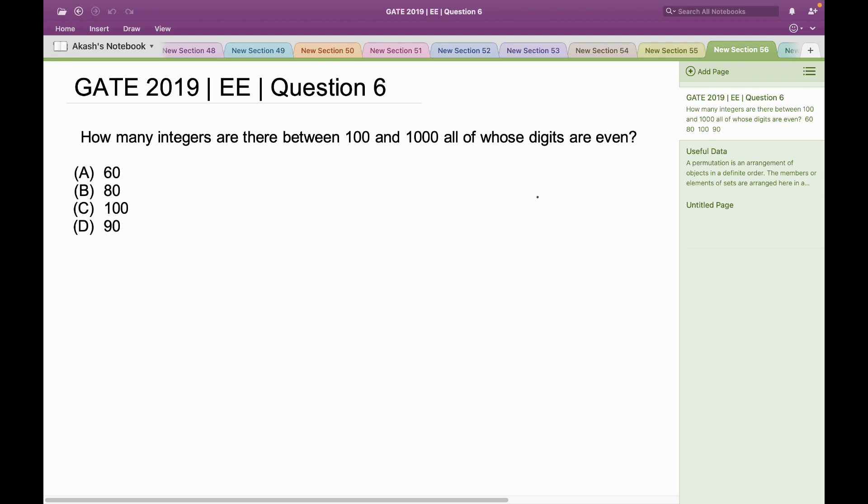Hello everyone, this is a question asked in GATE 2019 in electrical engineering. How many integers are there between 100 and 1000 all of whose digits are even?